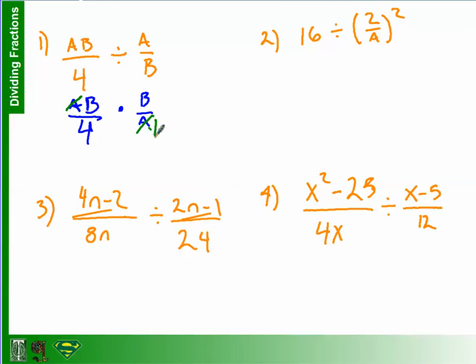And so now we are going to multiply the numerators, multiply the denominators, and we'll be done. B times B is B squared. 4 times 1 is 4. And that's it. So not too bad, really.